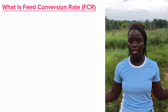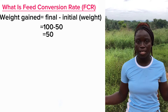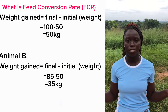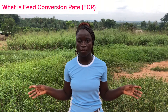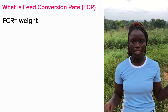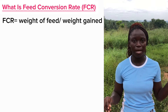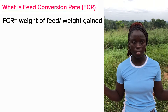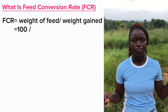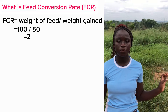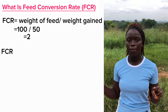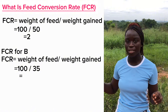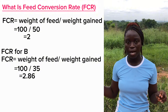For Animal A, the weight gain is 100 minus 50 kg, which gives us 50 kg. For Animal B, the weight gain is 85 minus 50 kg, which gives us 35 kg. Now calculating FCR: for Animal A it is 100 over 50, which equals 2. For Animal B it is 100 over 35, which gives approximately 2.86. So Animal A has a lower FCR than Animal B.